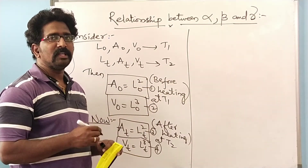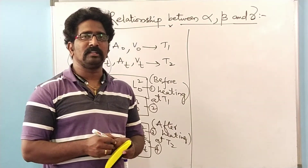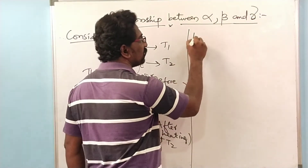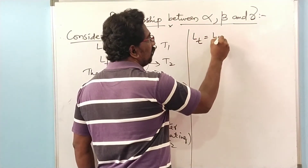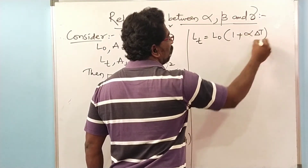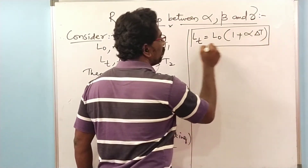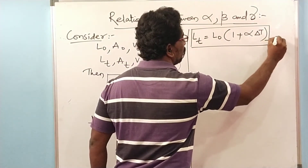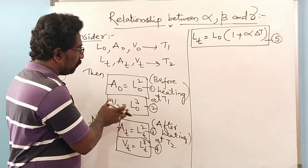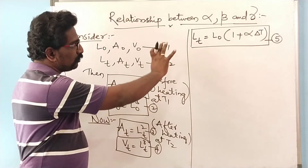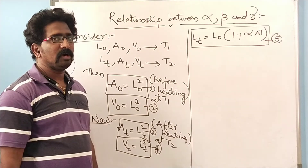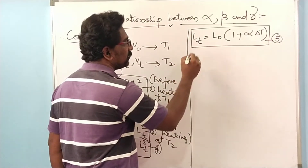As per the linear expansion we have studied, the formula is L-T equals L-naught times (1 + alpha times delta T). Let this be equation number 5. With respect to equation 1, I can now square both sides of equation 5 to derive the relationship for superficial expansion.